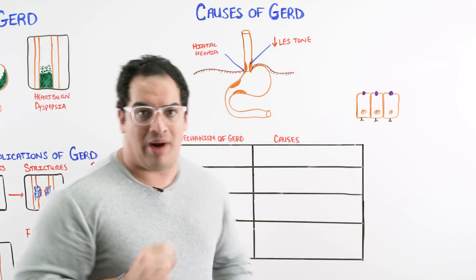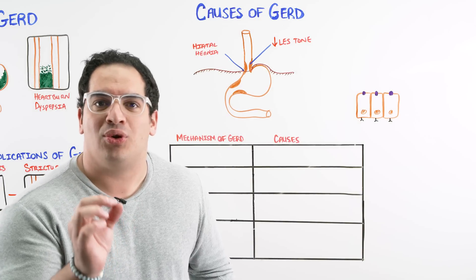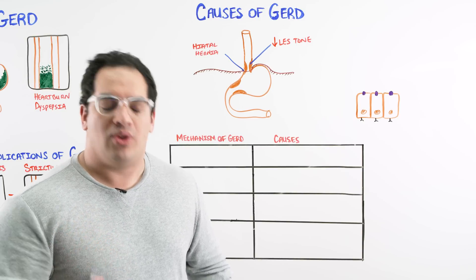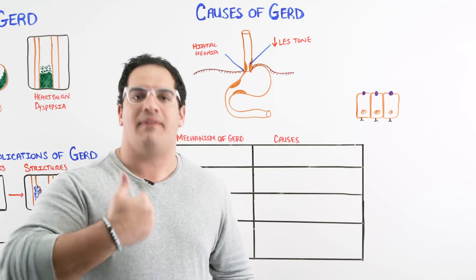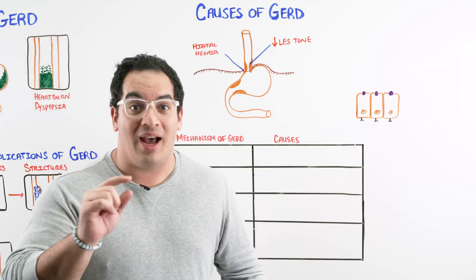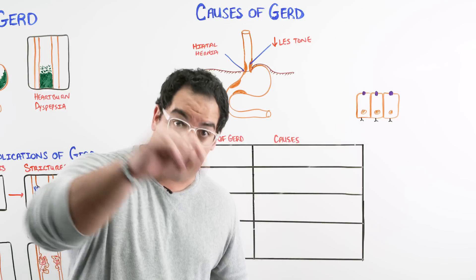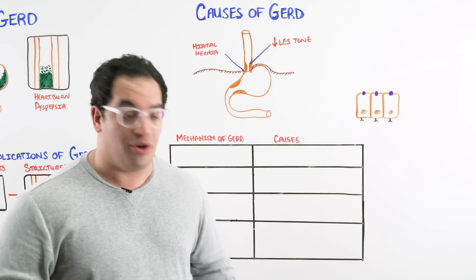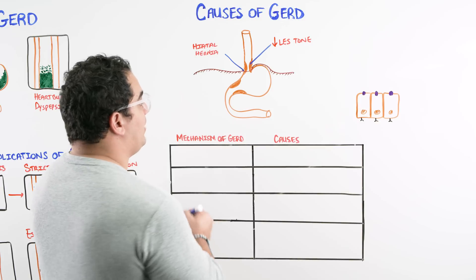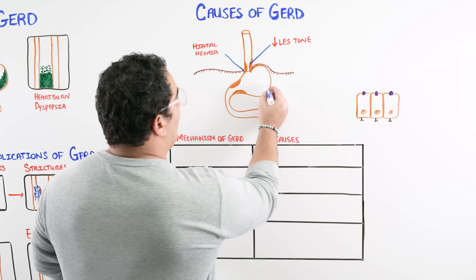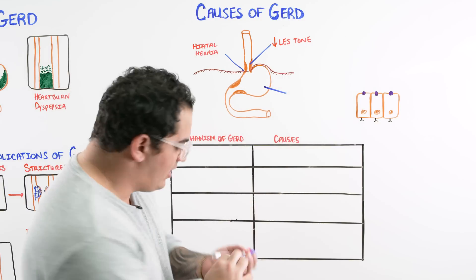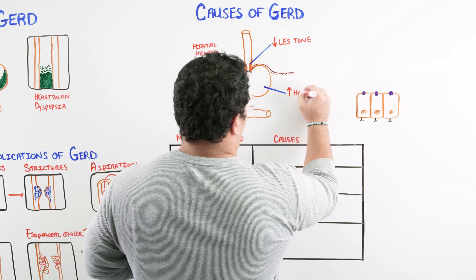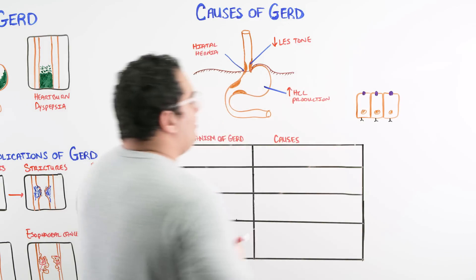The third mechanism is that the stomach is producing much more hydrochloric acid than normal. If there's already acid going into the esophagus, having a lot more of it will cause more severe symptoms. So another problem is increased hydrochloric acid production.